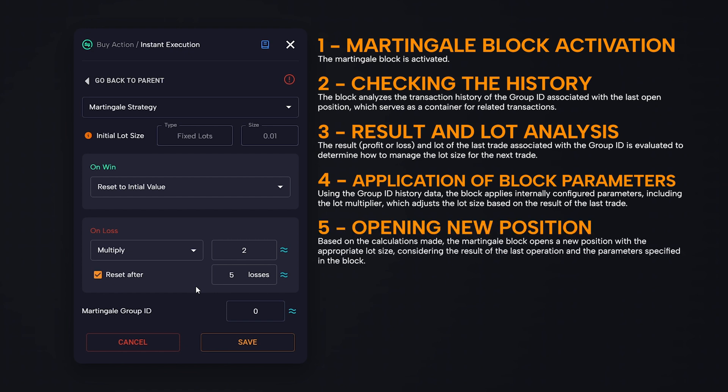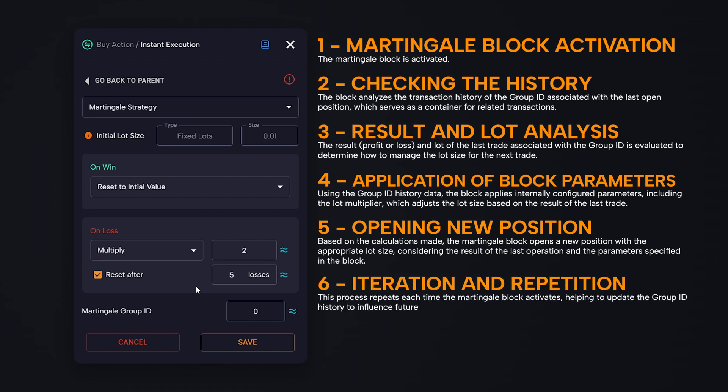Opening new position: based on the calculations made, the Martingale block opens a new position with the appropriate lot size, considering the result of the last operation and the parameters specified in the block. Iteration and repetition: this process repeats each time the Martingale block activates, helping to update the group ID history to influence future trades.